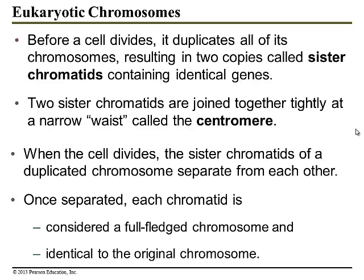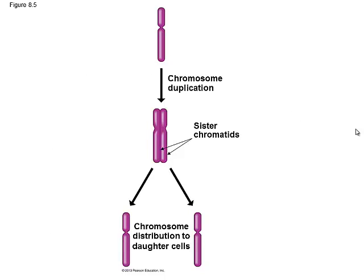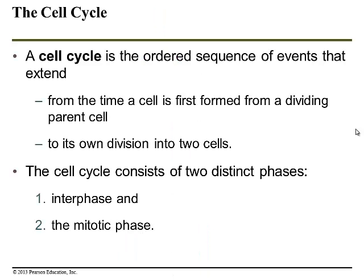Sister chromatids are duplicates of chromosomes that will eventually be pulled apart and separate from each other. Once they separate, each chromatid is a full-fledged chromosome on its own. So I make copies, create sister chromatids. The centromere holds them together. When the cells divide, I pull them apart — one gets one copy, one gets another. The two daughter cells are going to look exactly the same as the original cell.